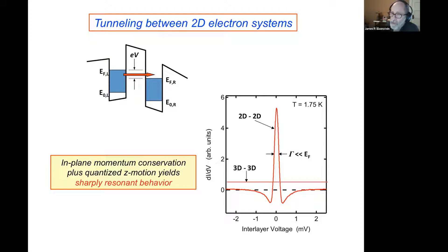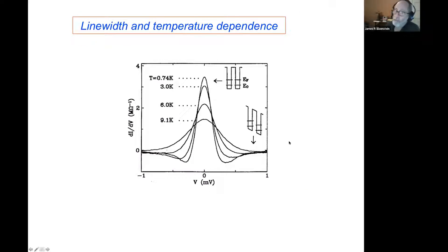There's that beautiful resonance — very narrow, much narrower than the Fermi energy of these two-dimensional electron gases. It's a function of temperature: it gets broader as temperature is raised. The naive thing to say would be that this is thermal smearing of the Fermi surface, but I want you to understand that it's absolutely not true. It has nothing to do with thermal smearing of the Fermi surface.